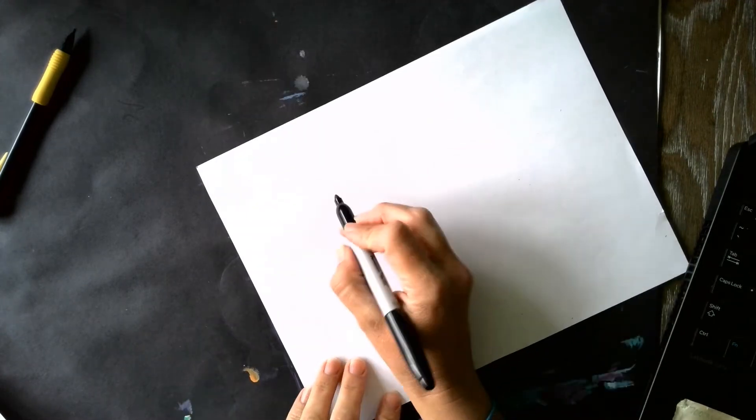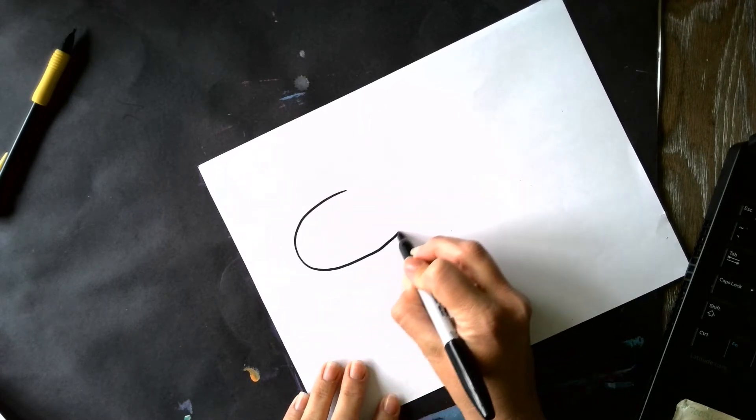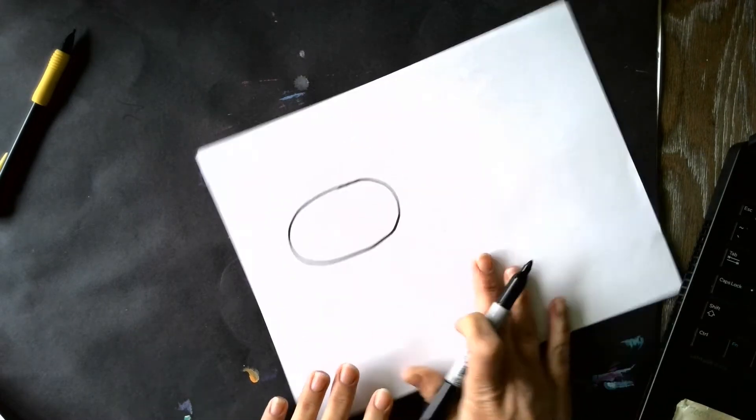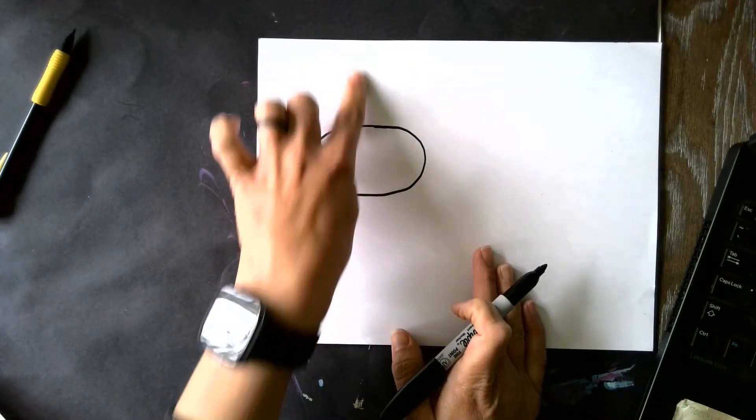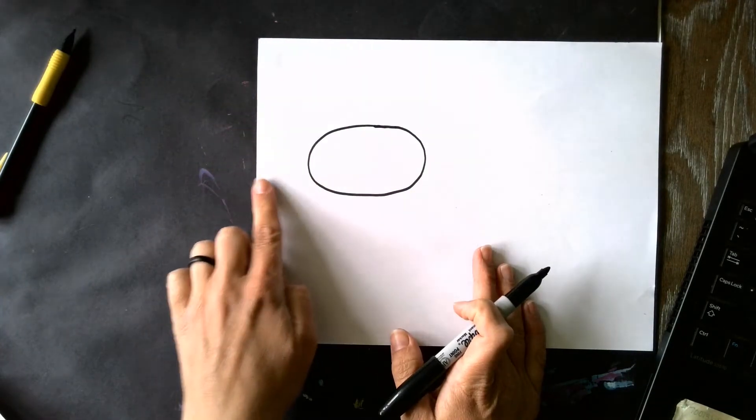Now the head is going to be an oval. There's an oval right there. Notice I've got some space between the top of my paper and the side.